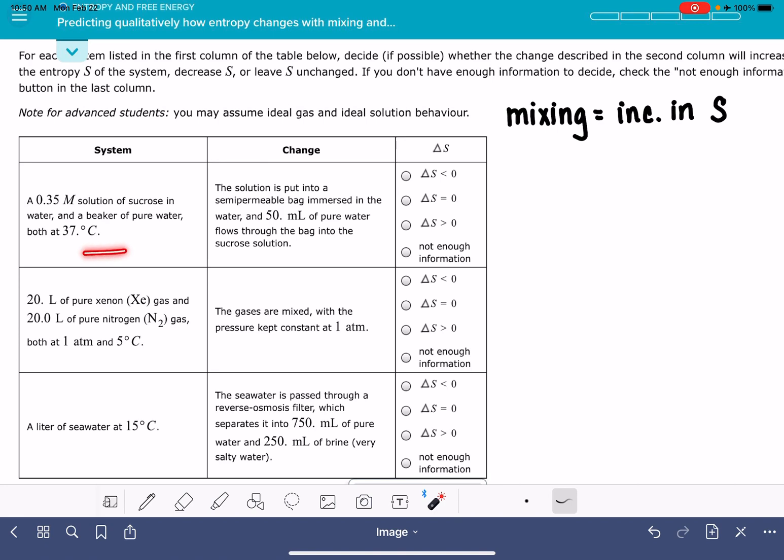So let's look at the first example. We have a 0.35 molar solution of sucrose, and it says that water flows into the sucrose solution. This is just a form of mixing. So dilution, I want you to think about dilution as you are mixing the solution with more water. We want to think about dilution the same way we would think about mixing. And then this would cause an increase in entropy, so entropy would be a positive number.